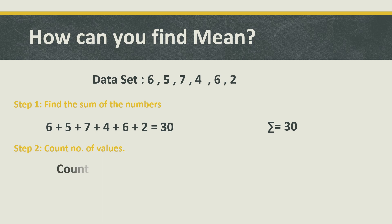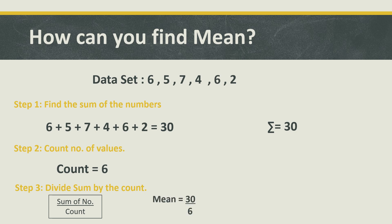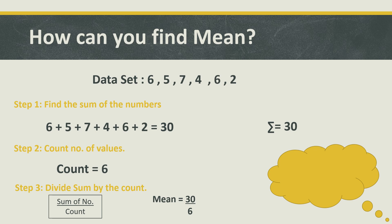Step number 2 will be counting how many values there are. There are six values, so count equals 6. Then step number 3 will be dividing the sum by the count: we have sum 30 and we divide it by 6. After dividing, our answer is 5.